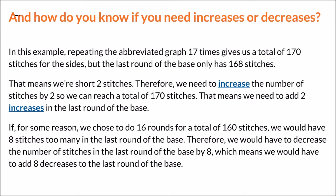If, for some reason, we chose to do 16 repetitions for a total of 160 stitches, we would have 8 stitches too many in the last round of the base — because we have 168 stitches in the last round but only 160 stitches in the pattern for the sides. Therefore we would have to decrease the number of stitches in the last round of the base by 8, meaning we'd have to add 8 decreases. When it comes to knowing where to put the increases or decreases, just know that they should be evenly spread out. You don't want to have the two increases right next to each other — maybe put the first increase at the first stitch and the second somewhere in the middle of the round.